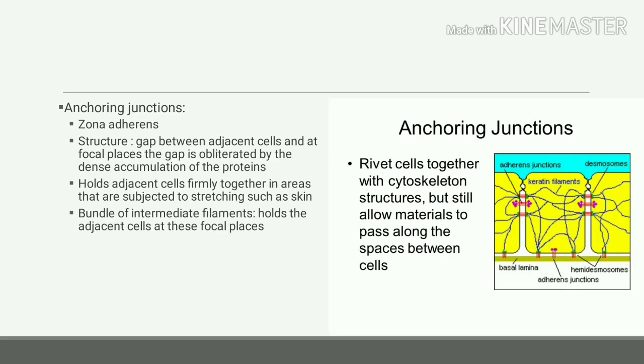The second variety of intercellular junctions are anchoring junctions, also known as zona adherens. Here, cell membranes of two adjacent neighboring cells come together, but there is a gap of about 15 to 20 nanometers. At focal places, this gap is filled by dense accumulation of proteins.